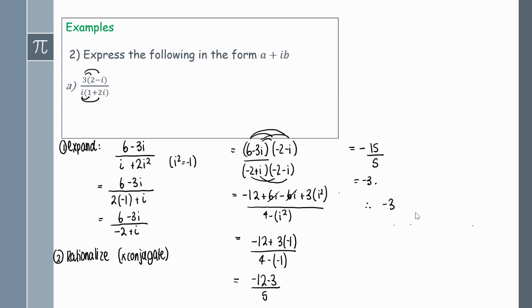That will give me minus 15 over 5 which equals minus 3. To write minus 3 as a complex number, I can just write it as minus 3 plus, well there's no imaginary parts, so I can write it as plus 0i.